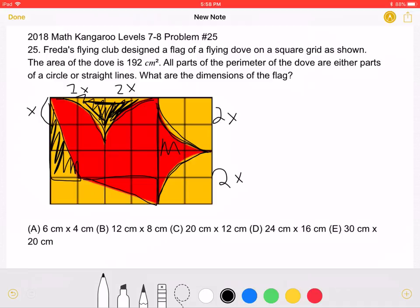Now we can see that we can put the entire red area, which is the area of the dove, into this rectangle right here, which is 4X by 3X.